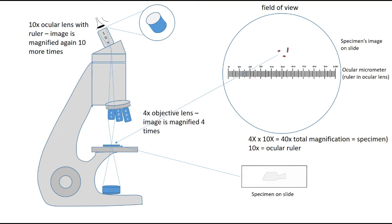So that means my specimen is magnified first four times, secondly ten times, for a total magnification of 40 times. The specimen is on a slide on the stage of the microscope, but the ocular micrometer is actually located just below the ocular lens. So its image size is only going to be magnified once by the ocular lens and won't be affected by the magnification of your objective lens.